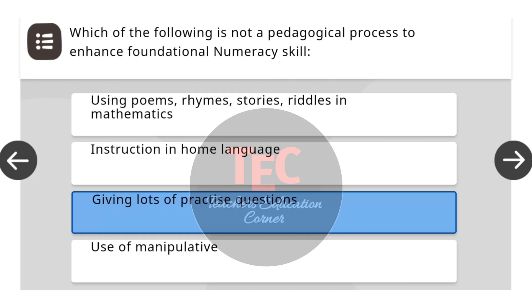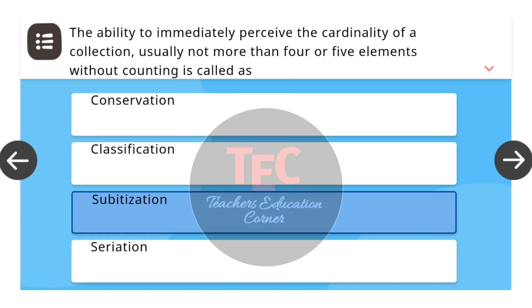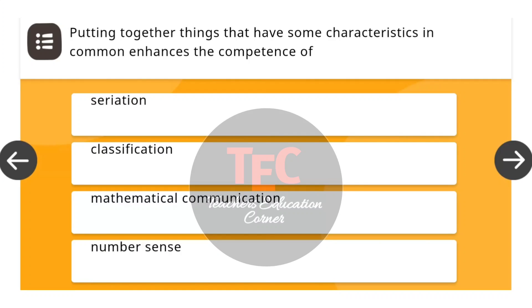Next question: The ability to immediately perceive the cardinality of a collection of objects, usually not more than 4 or 5 elements, without counting is called as — the correct answer is subitization. Next question: Putting together things that have some characteristics in common enhances the competence of — the correct answer is classification.